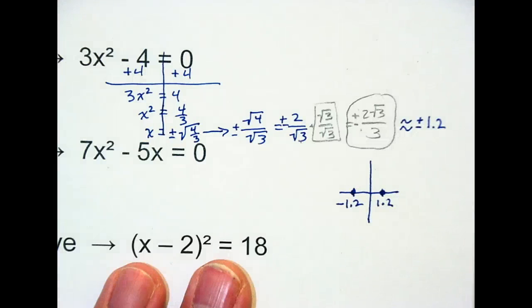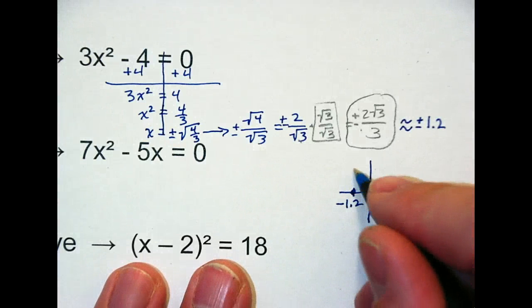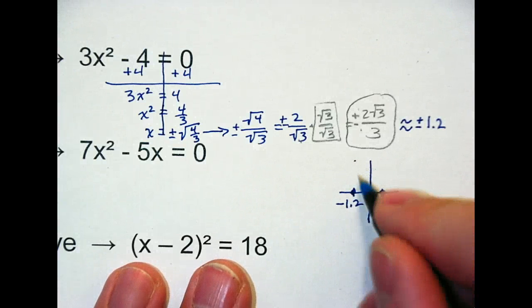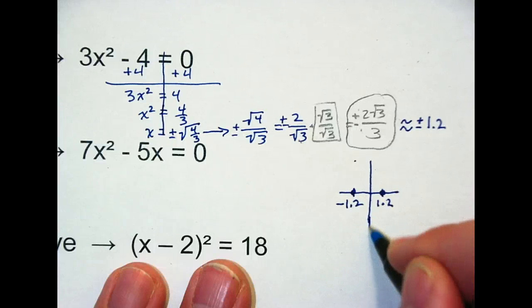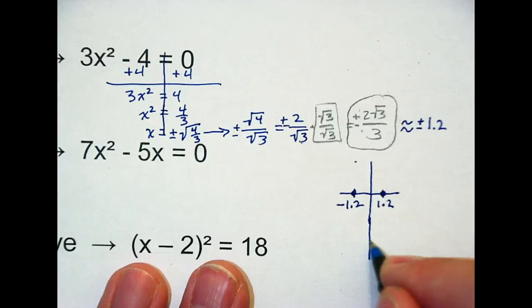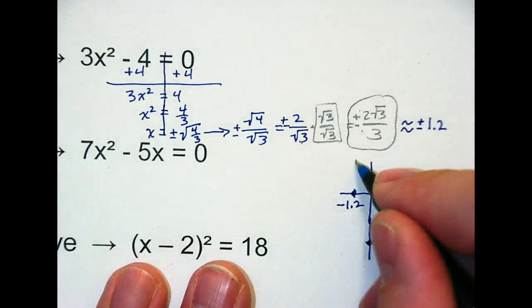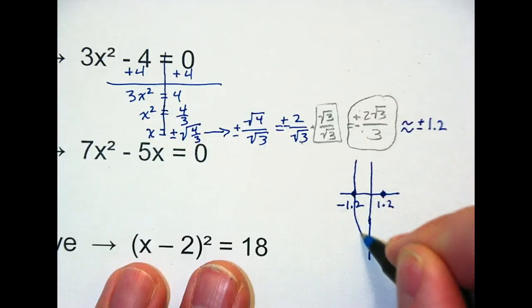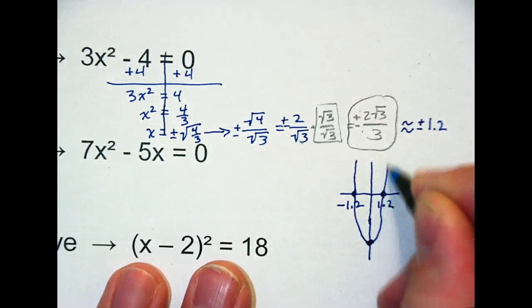We know a is 3, so it's positive, so it's going to go down, and it's going to have a y-intercept of negative 4. It's going to hit somewhere down here. That's actually my vertex, because the b-term's not there, so it doesn't shift left or right.